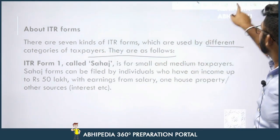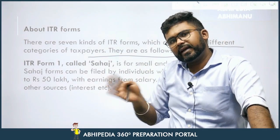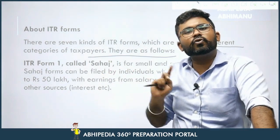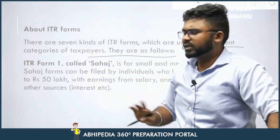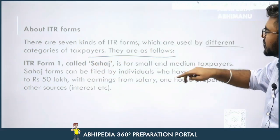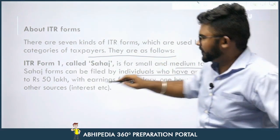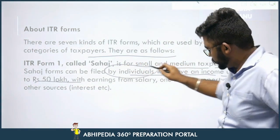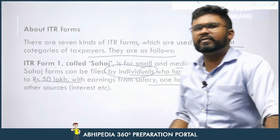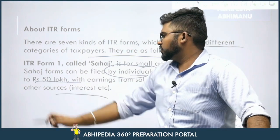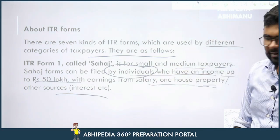ITR form number one and ITR form number four have separate names. A direct question can be asked on this: Sahaj is the ITR form one — not four. ITR form one, called Sahaj, is for small and medium taxpayers. Sahaj forms can be filed by individuals who have income up to 50 lakhs, earning from salary, house property, and other sources — for example, interest from a fixed deposit — provided total income does not exceed 50 lakhs.